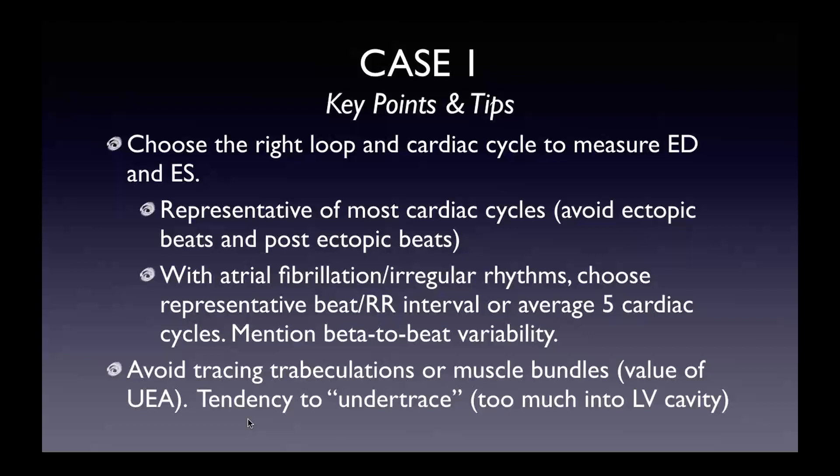With atrial fibrillation or irregular rhythms, choose a representative beat where the RR interval isn't too fast or too slow, or do the painstaking method of averaging five cardiac cycles. If you do measure, mention beat-to-beat variability, especially if the atrial fibrillation is very irregular. Even in sinus rhythm there's a little bit of beat-to-beat variability in contractility. As mentioned, avoid trabeculations or muscle bundles — that's really one of the values of ultrasound enhancing agents. We tend to under-trace too much into the pelvic cavity, but also avoid over-tracing around that bright endocardium.